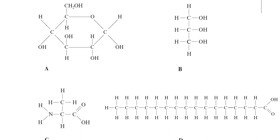Let's have a look at letter A. This compound is glucose — it is a six-carbon compound. The sixth carbon is pointing upwards above the molecule. Carbon number one is here, and attached to it is the OH group and a hydrogen group. If the OH on carbon number one is pointing down, that makes it alpha glucose.